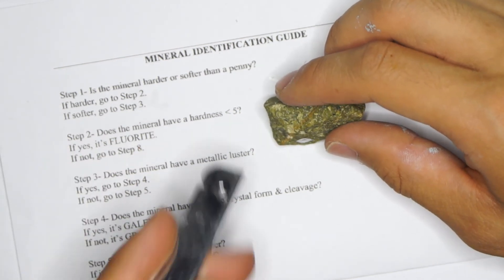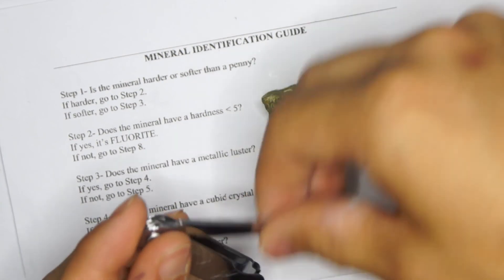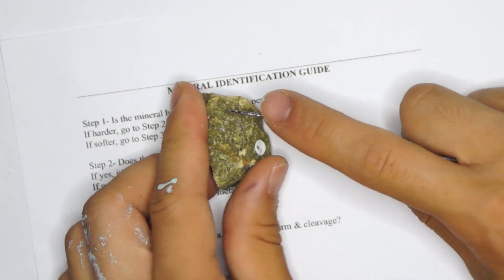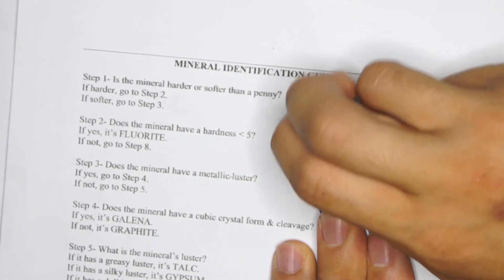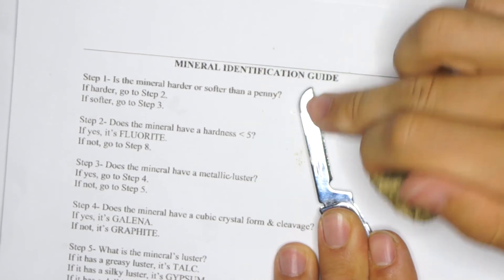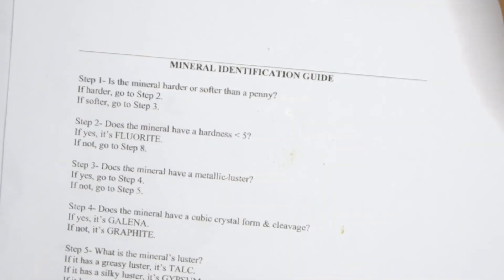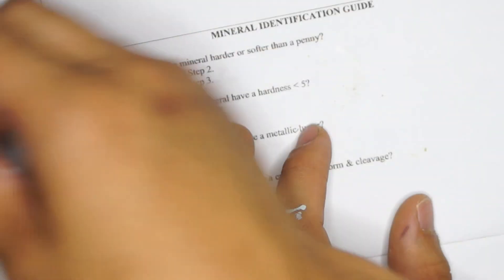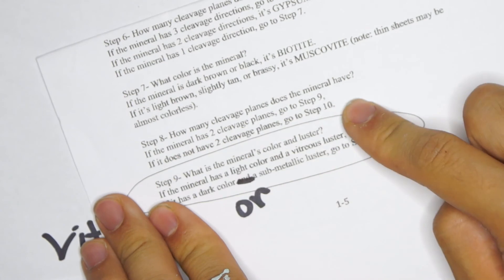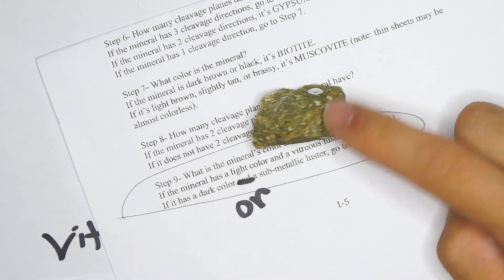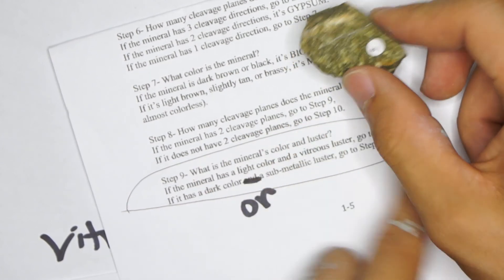Does the mineral have a hardness less than five? Normally you'd use the glass plate, but I'm going to use this metal just as an example so you understand how to use the metal for the hardness test. Your metal knife has a hardness of 5.5, but it's pretty hard to tell what's happening when you're scratching it. It looks like it scratched the rock. But an easier way to tell is if we get the blade right here and we scratch the blade with this rock. This rock should be able to scratch the metal on your knife. Yeah, so this scratches that smooth metal surface. So you know it's harder than this metal. So we can keep on moving. Does it have a hardness less than five? No, it's harder. Going on to step eight. How many cleavage planes does the mineral have? This one also does not have two cleavage planes.